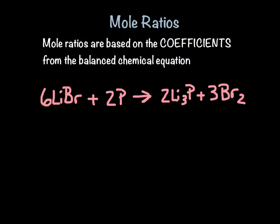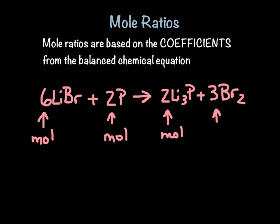If you think of this balanced chemical equation as a recipe, these are our reactants. We need six of these LiBr to react with two of these. This is what we end up making: two lithium phosphides and three bromines. These coefficients can be thought of as mole ratios. Six moles of LiBr react with two moles of phosphorus to produce two moles of lithium phosphide and three moles of the diatomic molecule bromine. It's really important that each coefficient stands for moles.